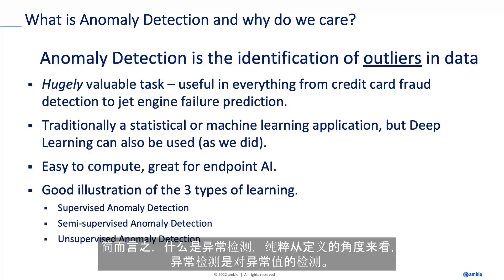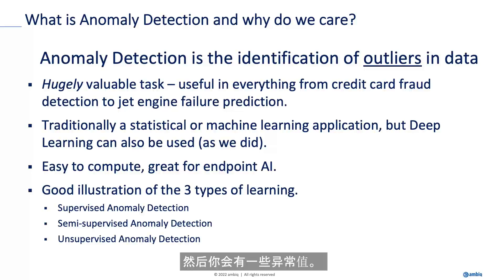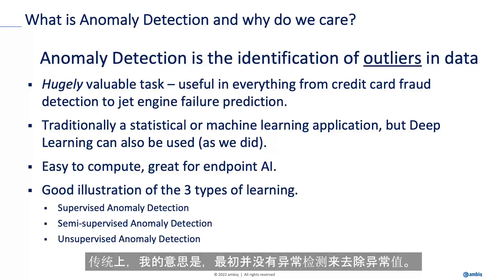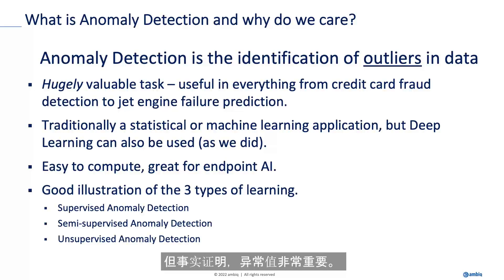Briefly, what is anomaly detection? Purely from a definitional point of view, anomaly detection is the detection of outliers in data. If you take any kind of data series, you'll always have things that kind of fit the curve or fit the data, and then you'll have some outliers. Initially, anomaly detection was used to get rid of outliers — if you're a scientist or a statistician, you don't want the curve fitting into all those weird points. But it turns out that outliers are very important, and now we view them with value. It is a hugely valuable thing to do in AI.